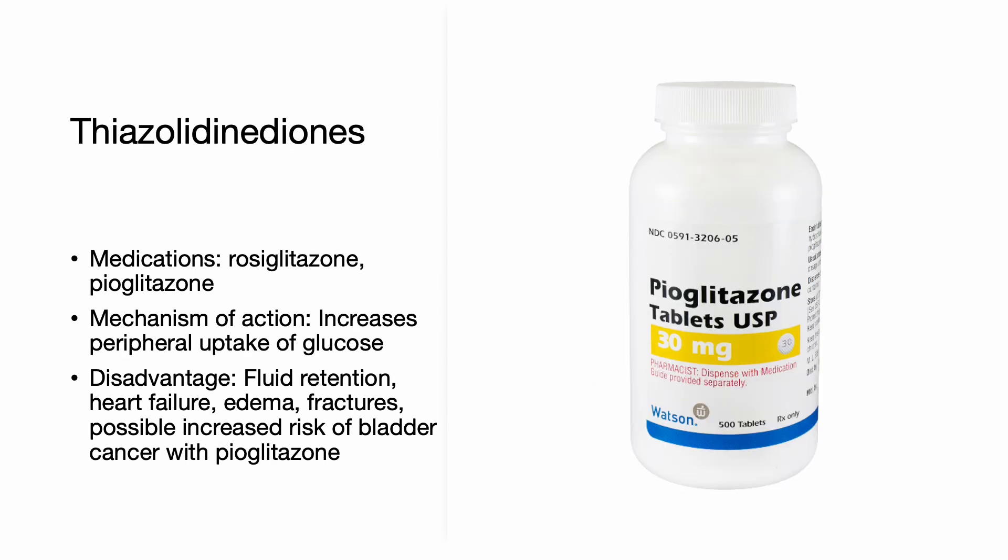Thiazolidinediones include rosiglitazone and pioglitazone. Their mechanism of action includes increased peripheral uptake of glucose. Disadvantages include fluid retention, association with heart failure, edema, fractures, and a possible increased risk of bladder cancer with pioglitazone.